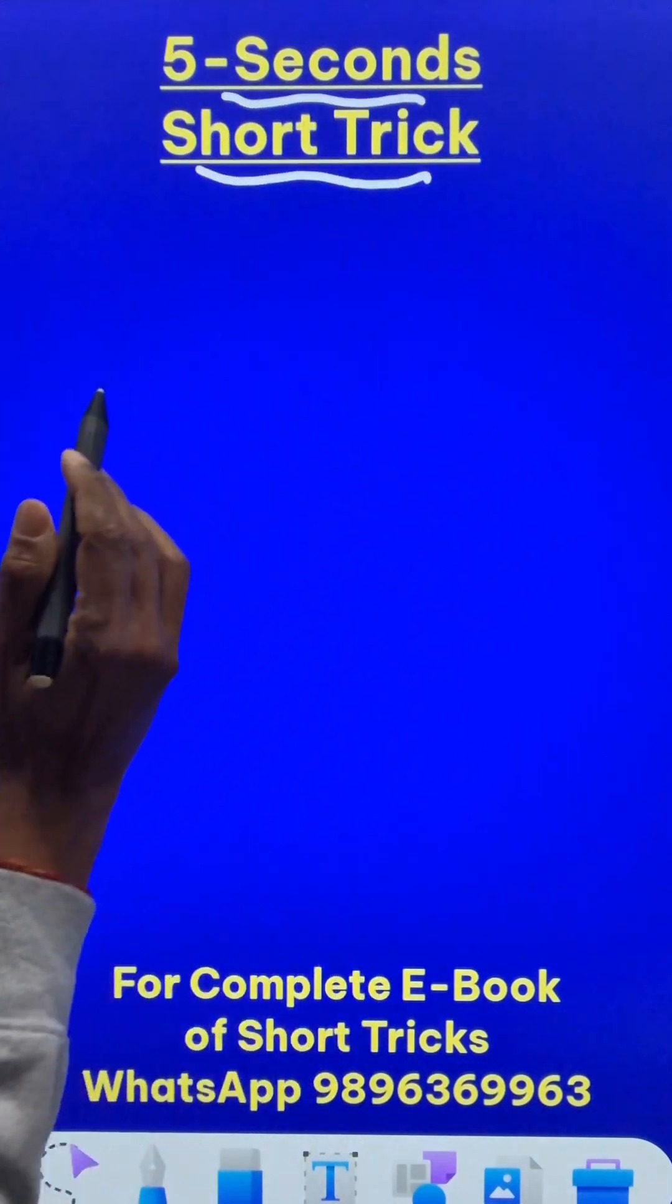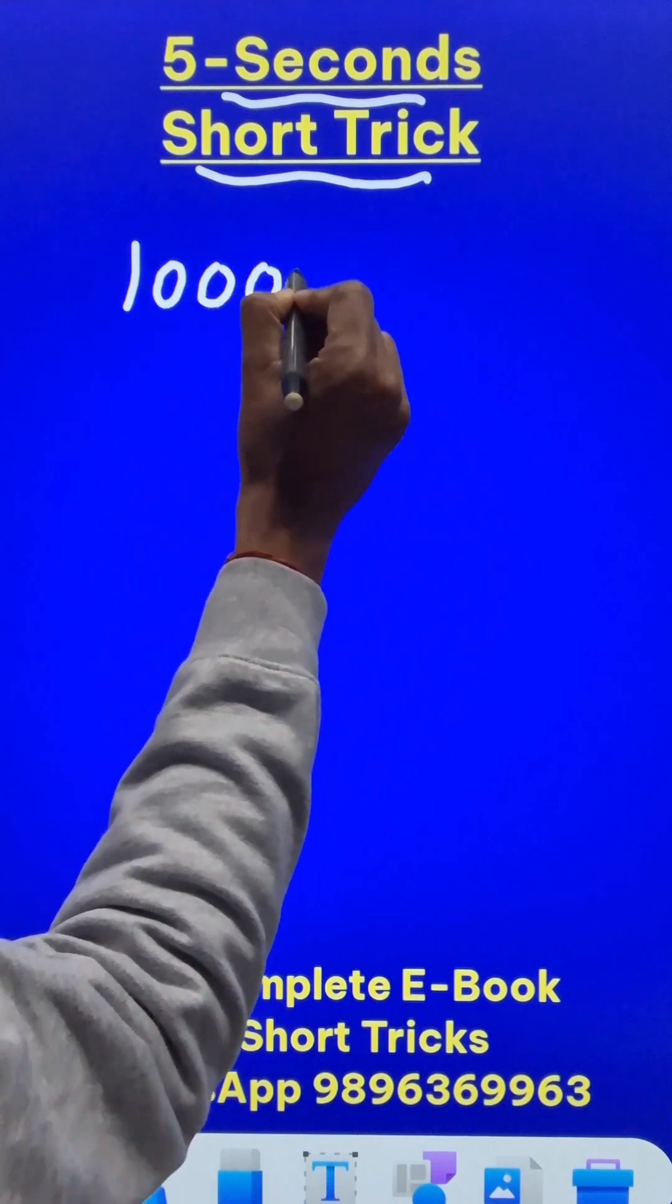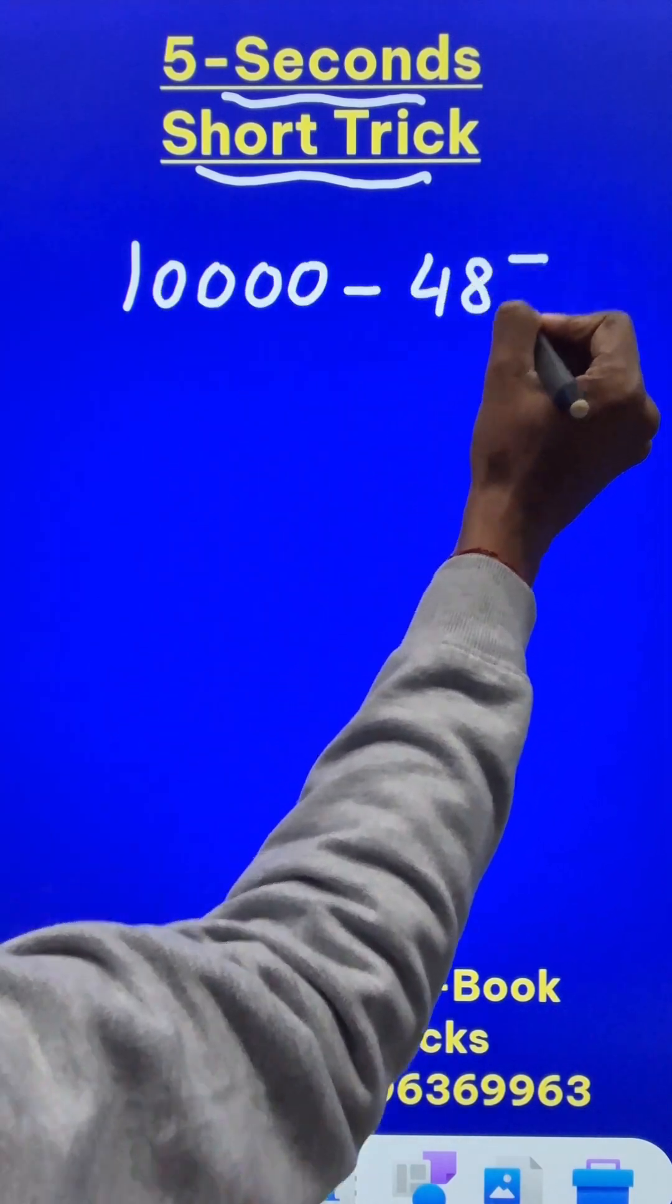Here is a 5 seconds short trick to subtract numbers. Just like you have a base number 10000 and you need to subtract a 3 digit number like 487 from this.